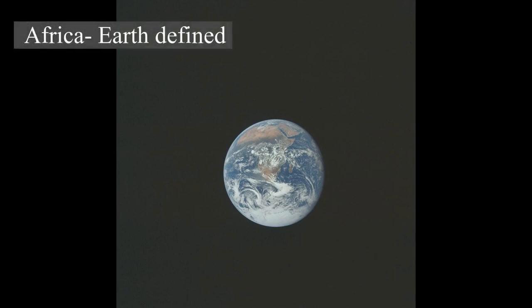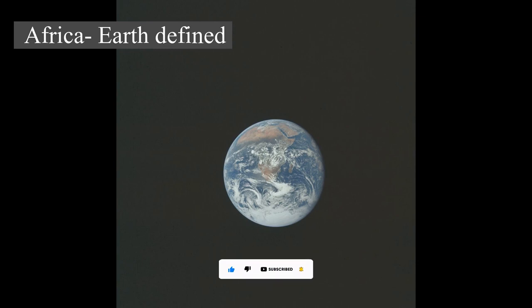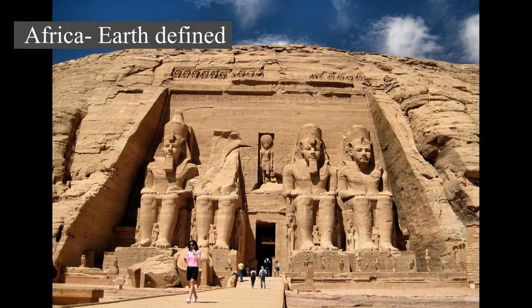Africa is the world's second largest and second most populous continent after Asia in both cases. At about 30.3 million km² (11.7 million square miles), including adjacent islands, it covers 6% of Earth's total surface area and 20% of its land area. With 1.4 billion people as of 2021, it accounts for about 18% of the world's human population.